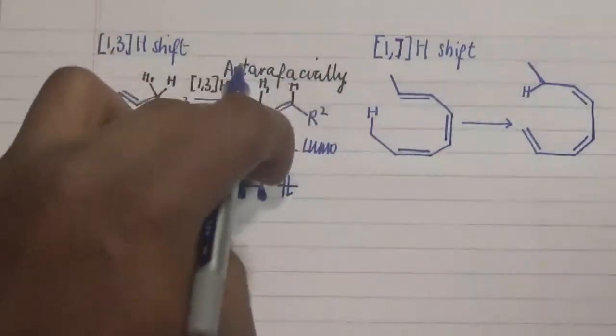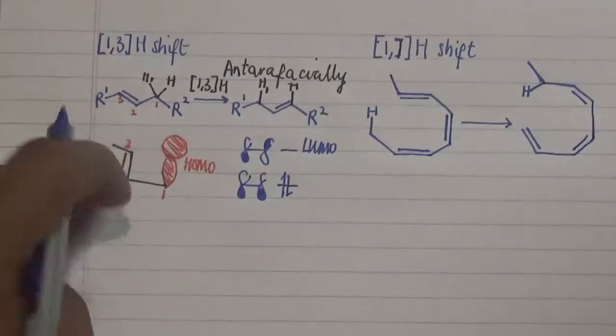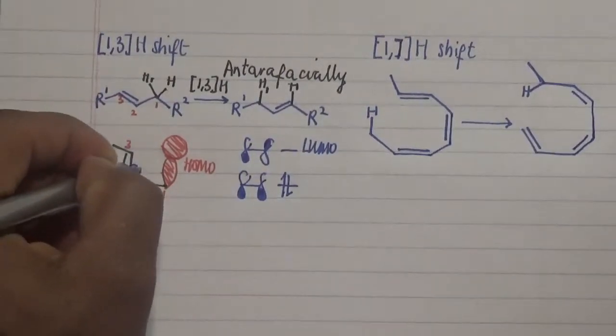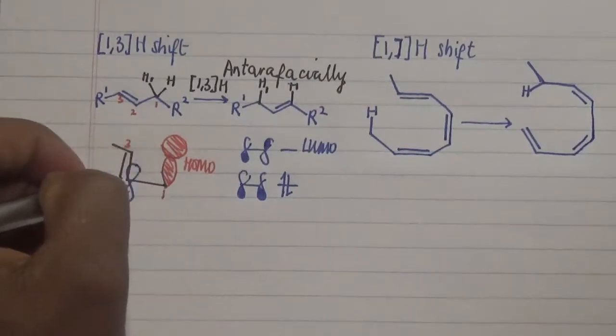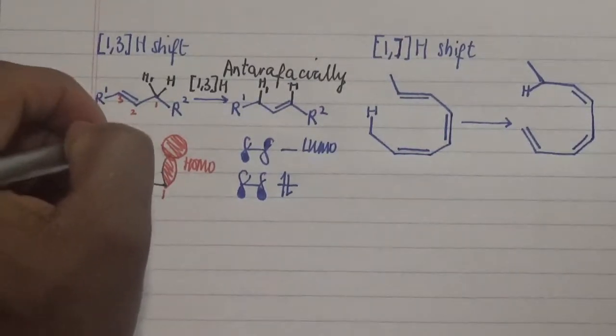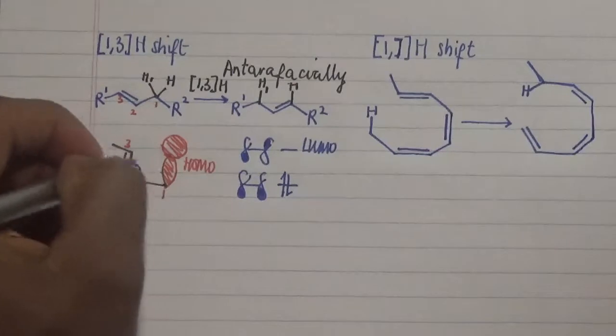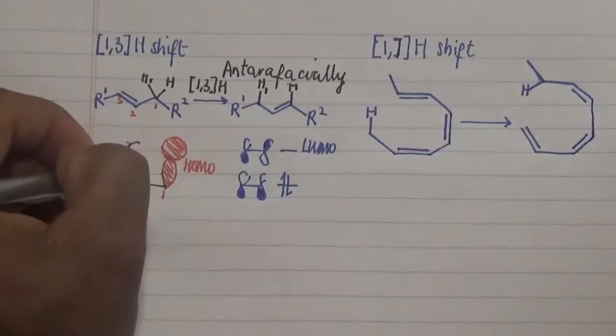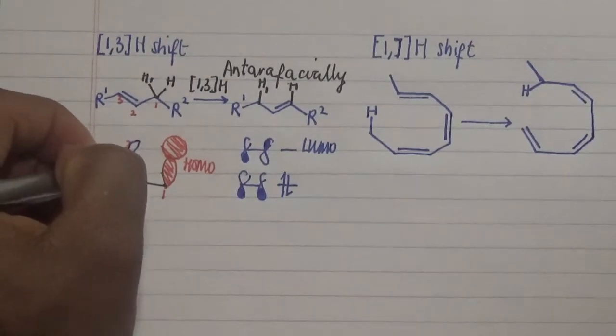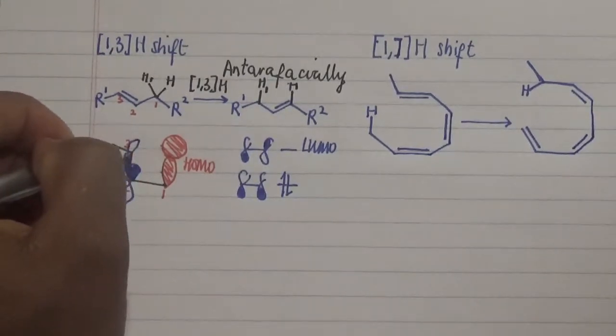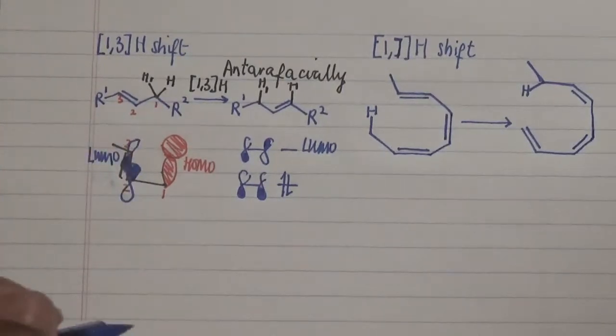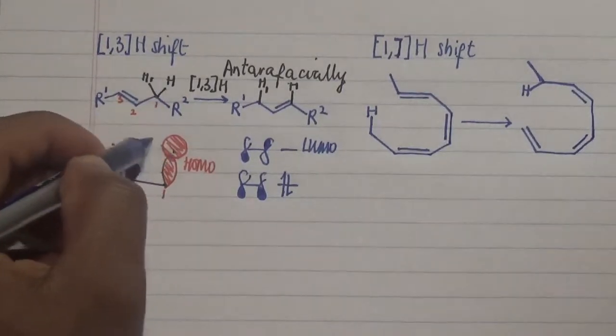If you position this particular one in terms of two electrons here and this being one, this automatically is our LUMO. And then if you translate this into this particular one over here, what we realize is that this is actually in phase here but this here is out of phase for our LUMO.